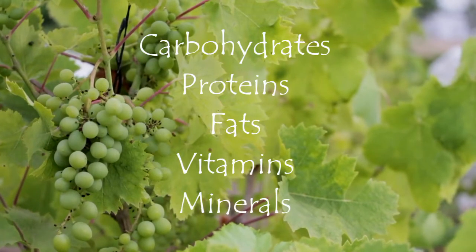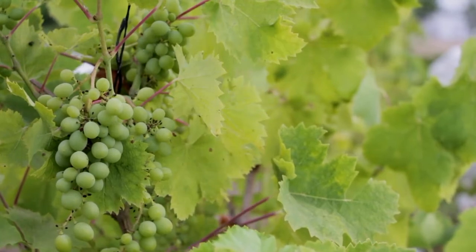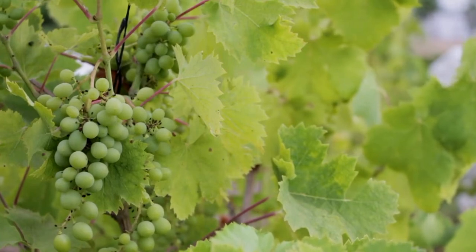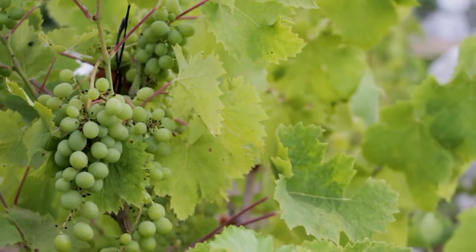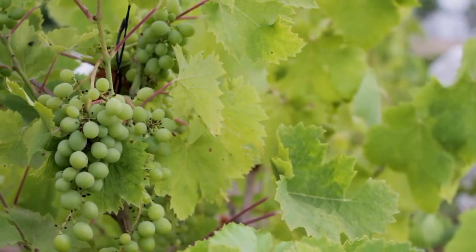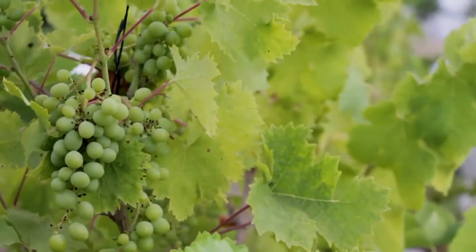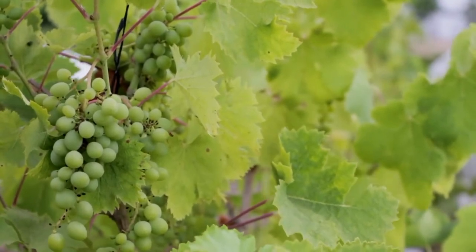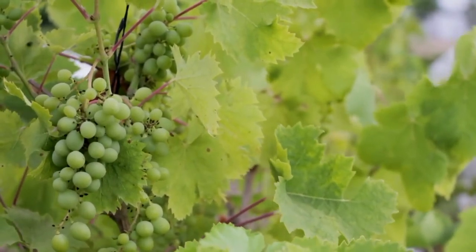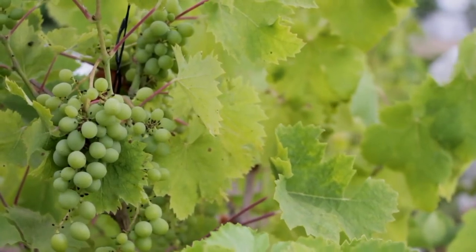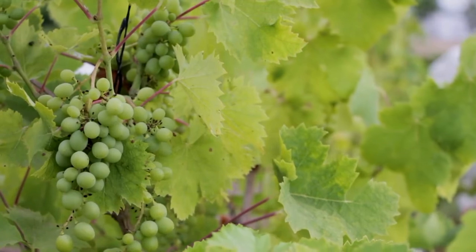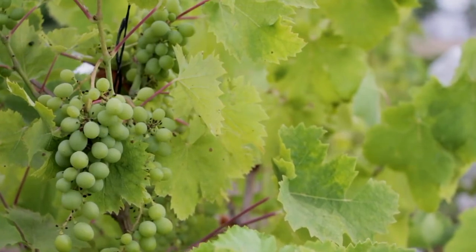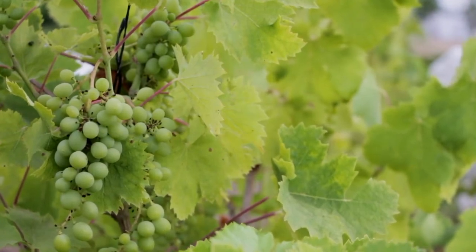The important nutrients present in food are carbohydrates, proteins, fats, vitamins, and minerals. Every food does not contain all the nutrients — the nutrient content in each food varies. For example, rice contains more carbohydrate than vitamin and protein, and milk is a rich source of a number of nutrients including protein and vitamin. Nutrition is a science that deals with the study of nutrients.